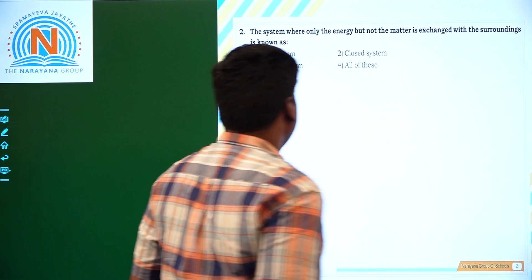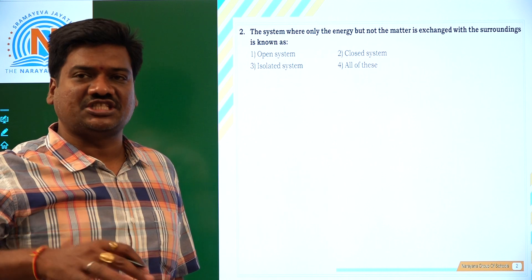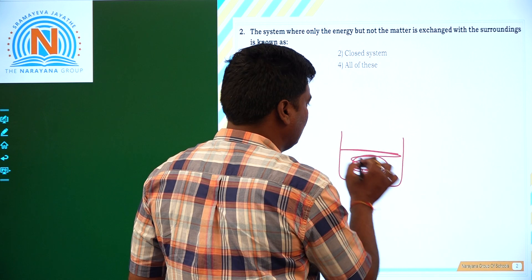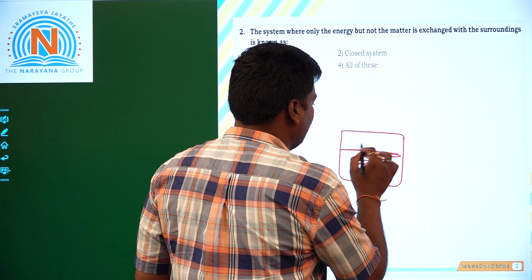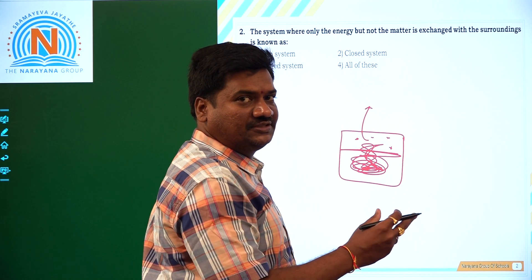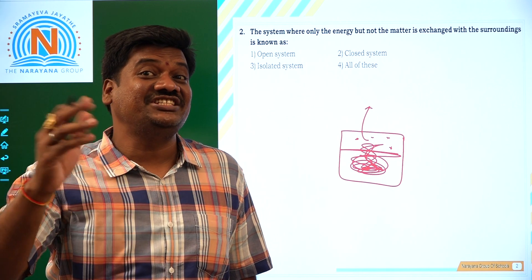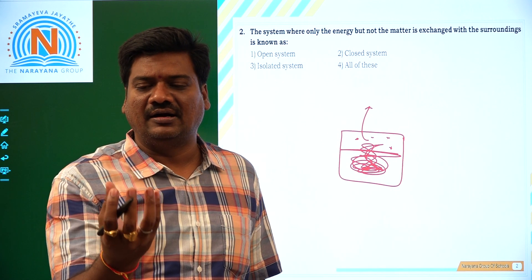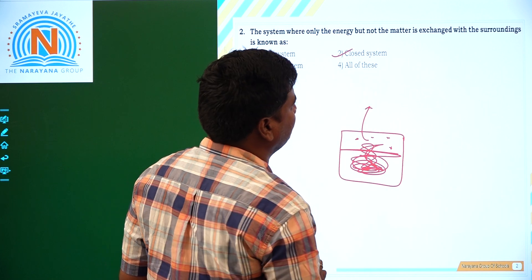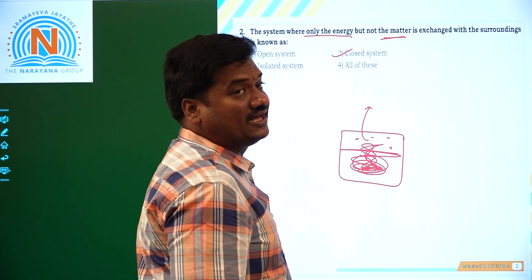Now come to the second question. The system where only the energy but not the matter is exchanged with the surroundings. In the closed system, if you take hot water in a closed vessel, few particles will be converted to gaseous state but will not come outside of the closed system. Water vapor will not come outside, but energy exchange takes place — you can feel it. Here matter will not change, but energy exchange takes place. It is called a closed system.